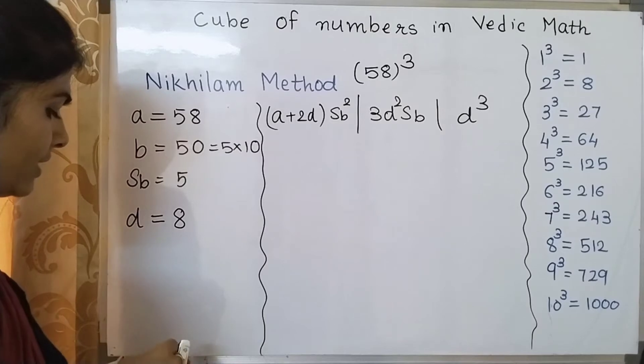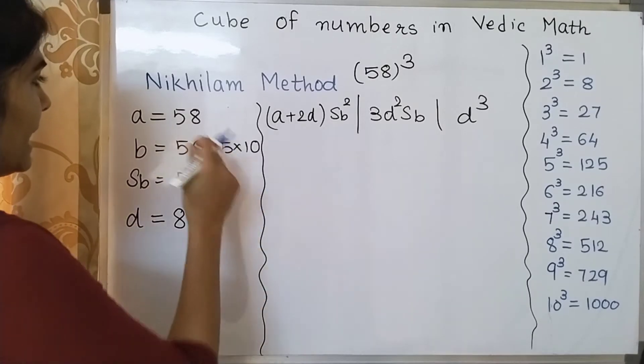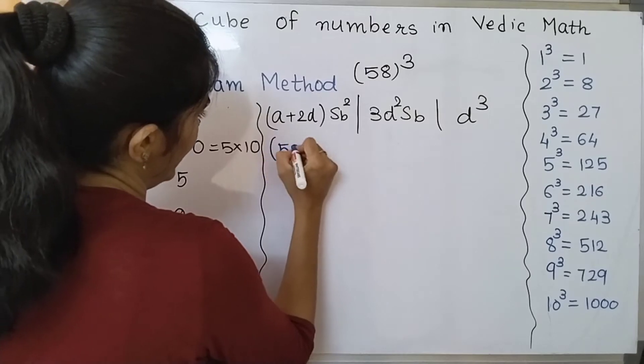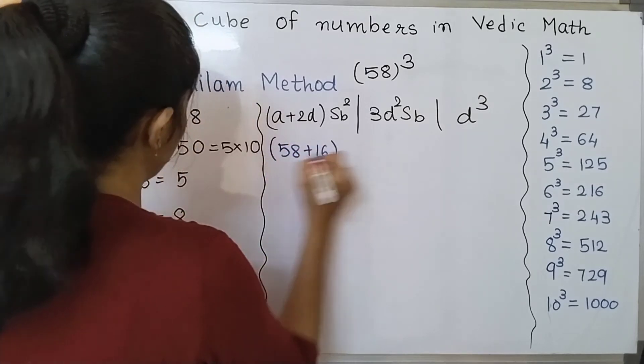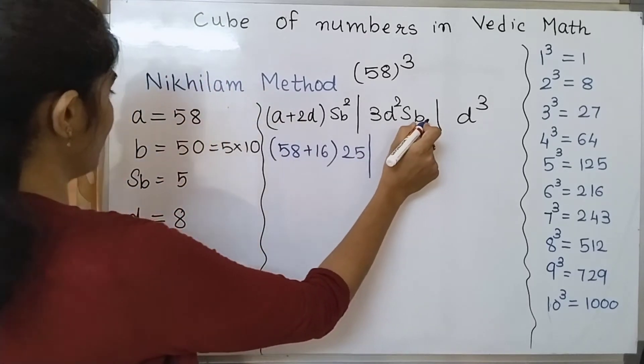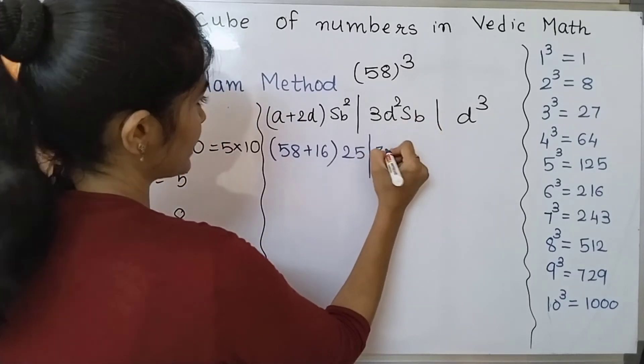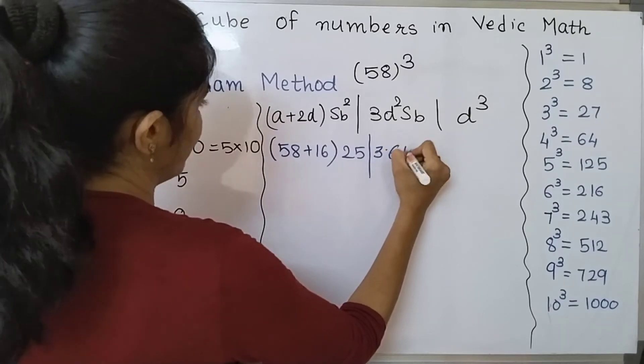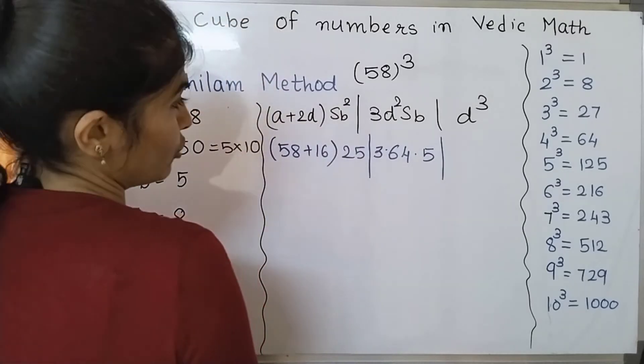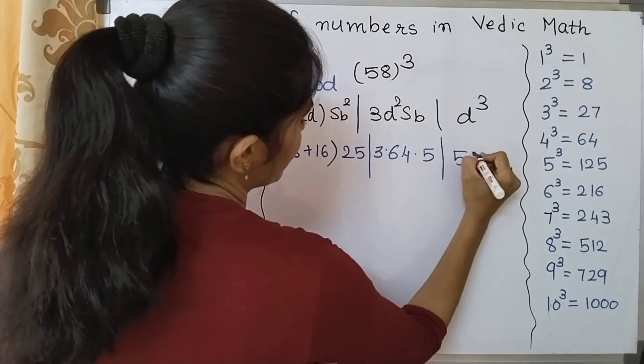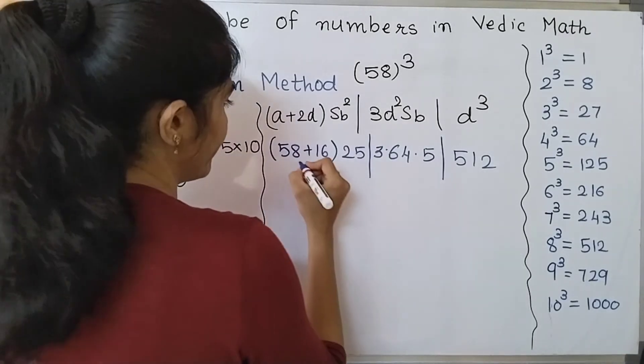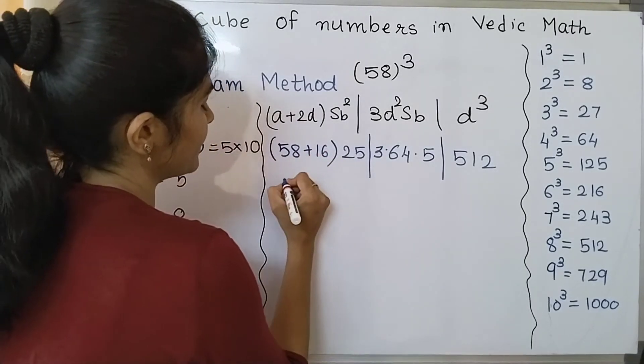So if we talk about the first term then my first term is a plus 2 times b, so 58 plus 16 times sub base square which is 25. 3d square times sub base, so three times d square, deviation is 8, so 64 times sub base which is 5. And cube of 8 which is 512.